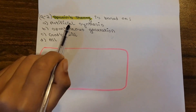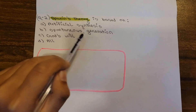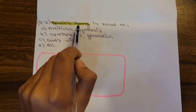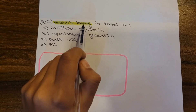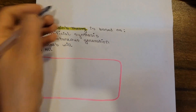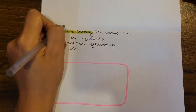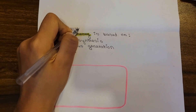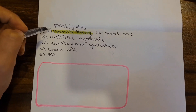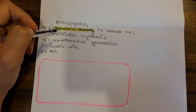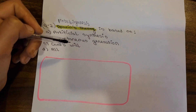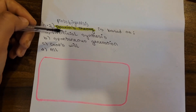Question number two: Oparin's theory is based on — artificial synthesis, spontaneous generation, God's will, or abiogenesis? Oparin's theory is the most accepted theory and is also known as the modern theory of origin of life, or the theory of proto-biogenesis. Life originated from the primordial soup through a series of chemical reactions followed by biological evolution.